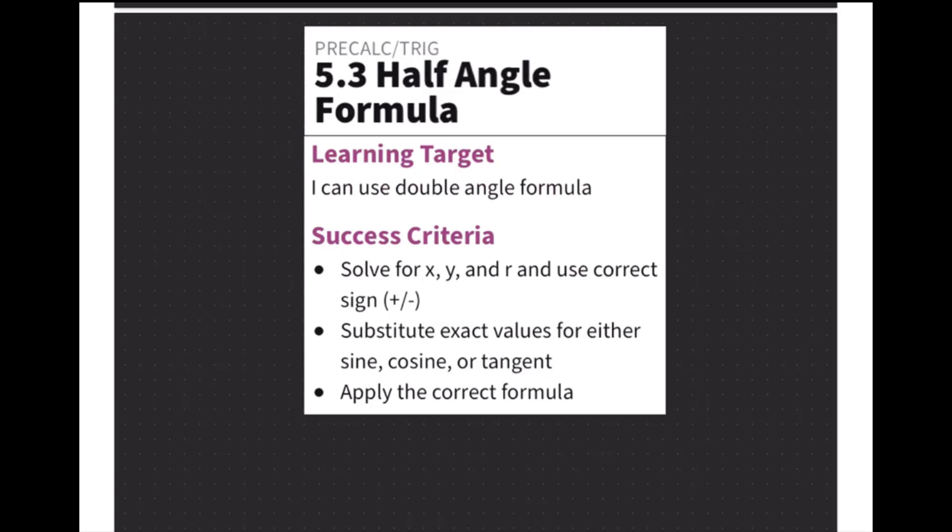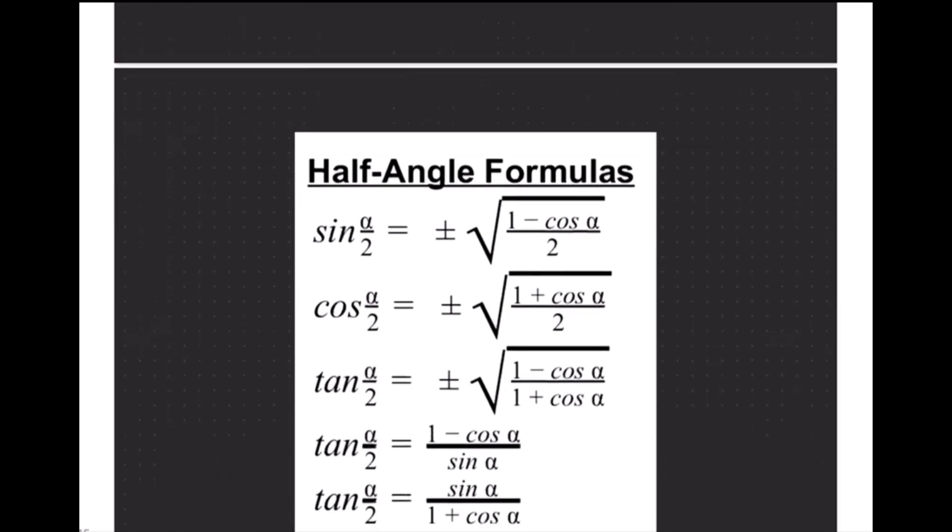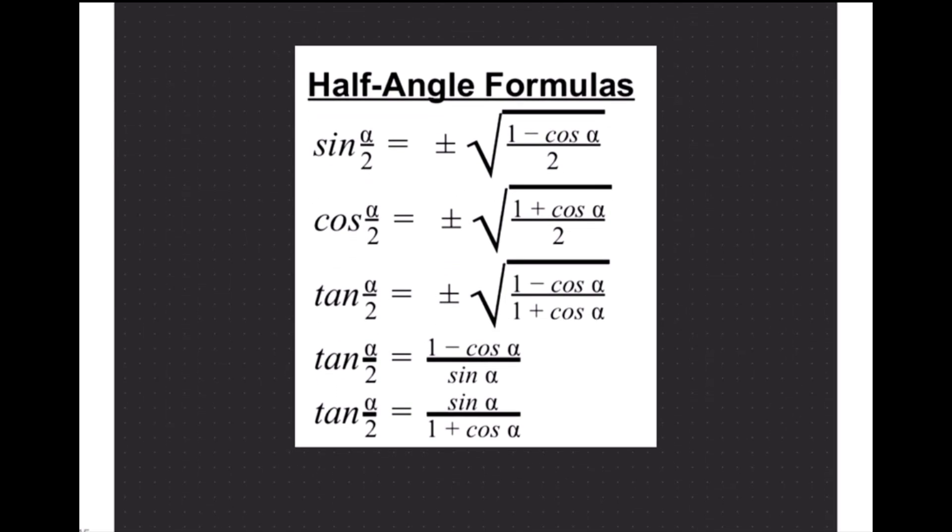Success criteria is kind of the same as what it's been. We need to be able to find that x, y, and r value. We need to look at the quadrants to see if they should be positive or negative. We need to substitute those values in for sine, cosine, or tangent, and then be able to pick the correct formula off of our formula sheet in order to get everything plugged in. Once we plug it in, then we can chug through the math.